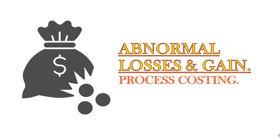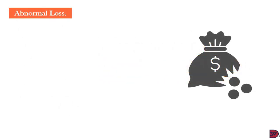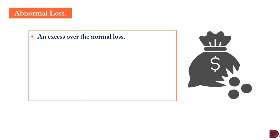In an earlier episode we discussed process costing where a loss that is expected and prepared for arises. In this video we are going to talk about the situation where the loss that is expected differs from the actual scenario. We'll start with abnormal loss — this is where the loss that is budgeted or prepared for is less than the actual. For example, if a business expects 100 units to be wasted but 110 are actually wasted, the extra 10 becomes the abnormal loss.